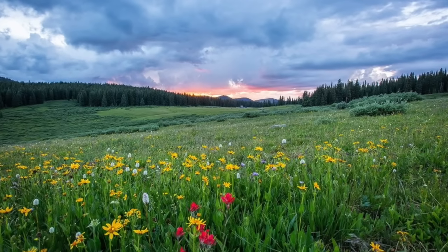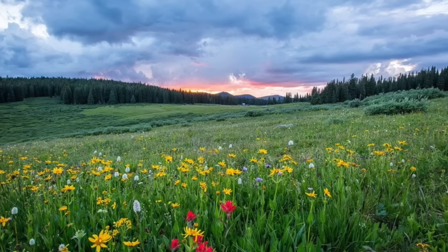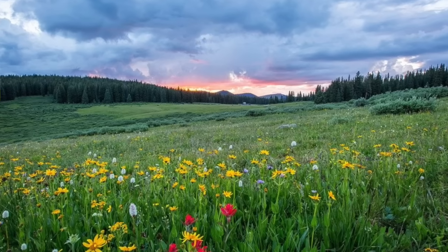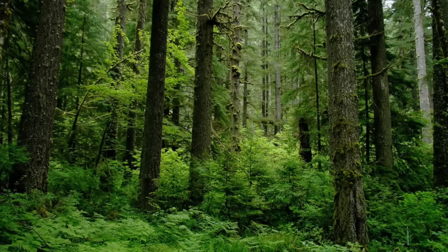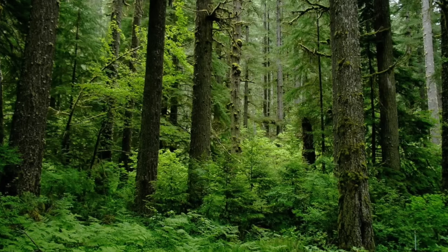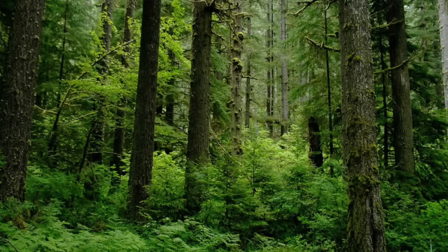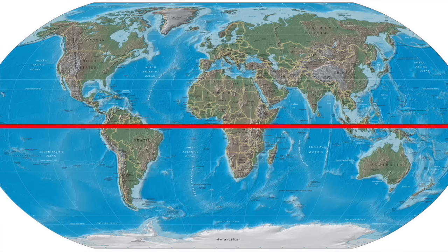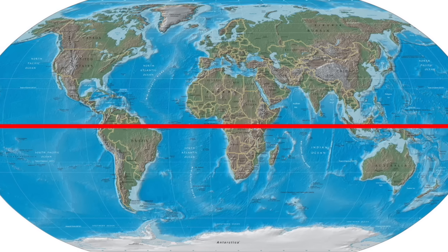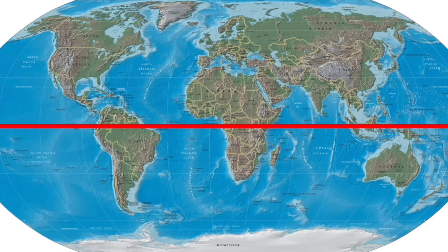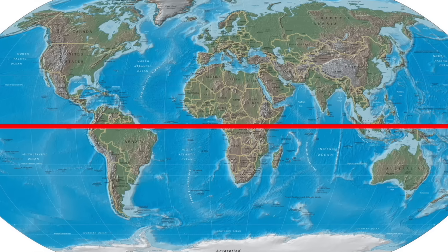So let's talk more about terrestrial biomes, which are on land. We'll start with the different types of forests. Trees are the main plants in forest biomes. All forests have lots of trees, but there are different types: rainforests, the temperate forest, and the taiga. One of the main differences is where they are located relative to the equator and the north and south poles. Rainforests are in the tropics near the equator, taiga forests are farther north, and temperate forests are located in between.